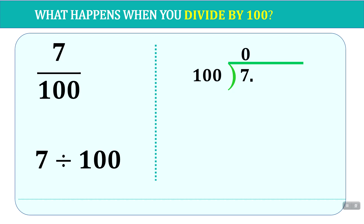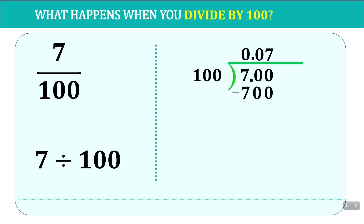Now we put a decimal point and add some zeros to give us some placeholders. We try 100 into 70, and we know 70 is still too small for 100 to go into it at least once. So again we put 0. Now we try 700 — how many times can 100 go into 700? That is 7 times. 7 times 100 is 700. When we subtract, we're left with 0. So 7 divided by 100 is 0.07.